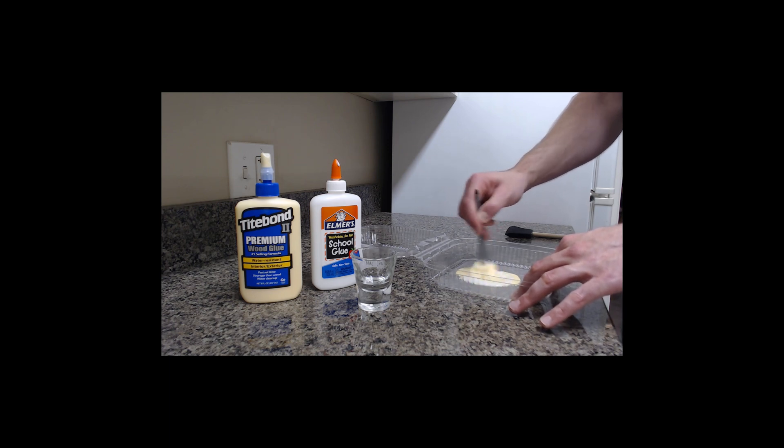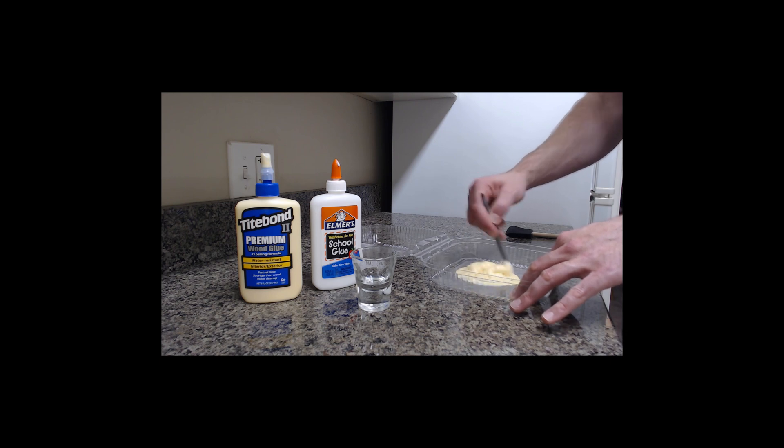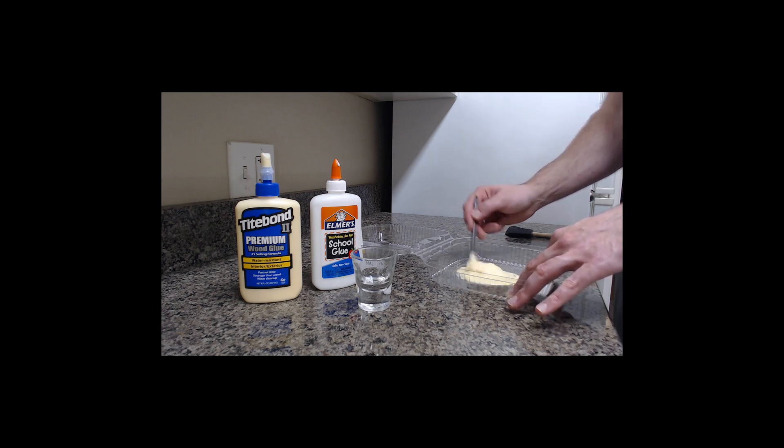Wood glue because it dries very strong. Elmer's glue because it dries very clear and then once you start mixing it up you'll notice it turns into a gross curdled mess. Just continue mixing and mixing until you finally give up and realize that this is a terrible idea that mixing these two glues together will actually not achieve the thing that you're looking for.